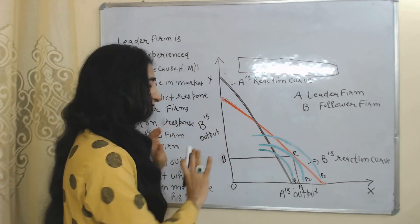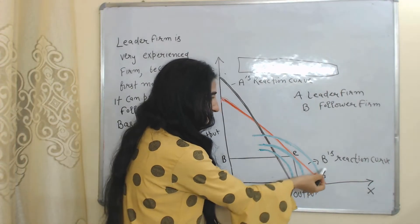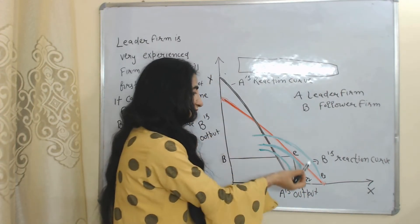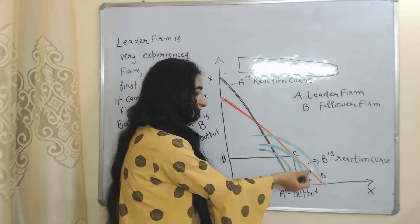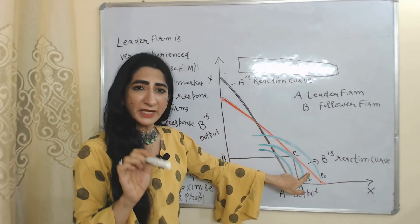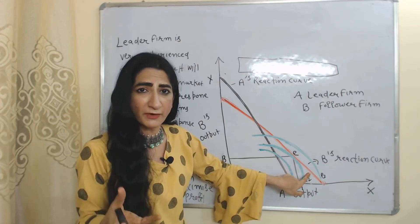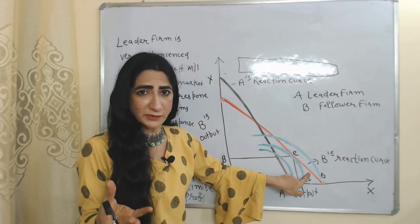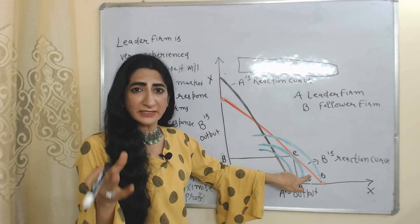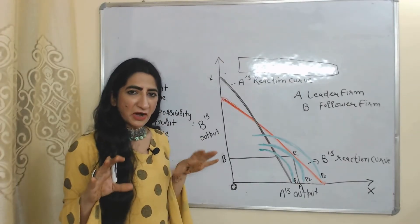We will see the same thing with the help of the diagram. The B curve shows B's reaction curve — the response of B to the strategy of A. This response firm A can predict in advance because A is a very experienced firm, and based on this response A will decide its profit-maximization output.